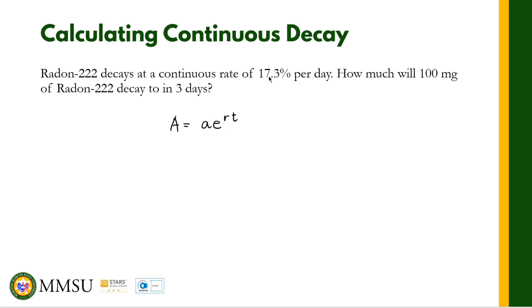Using our formula A = ae^(rt), you see this 17.3% is the rate of decay, 100 is our initial amount, and 3 days is our time t. So this is basically equal to 100 mg, e raised to 0.173 times 3.